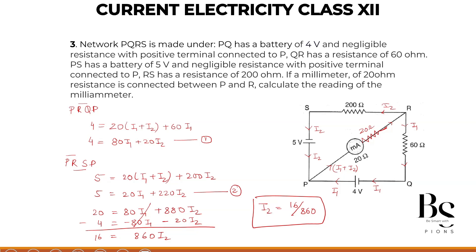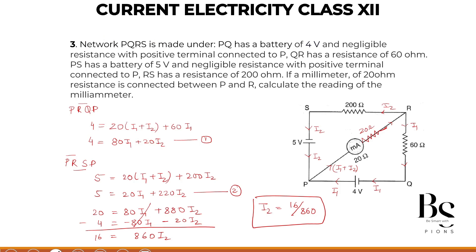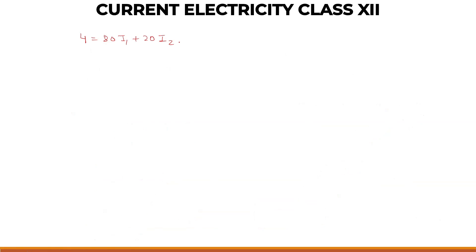Now let's find the I1. So I am taking the first equation 4 equals 80 I1 plus 20 I2. Now what is our value of I2? It is 16 by 860. Multiplied with 20 plus 80 I1 equals 4. Let's cancel this with this. 2, 43's. So 4 equals 80 I1 plus 16 upon 43.